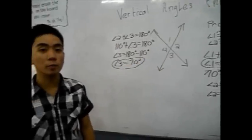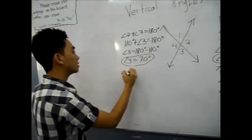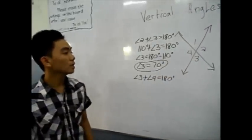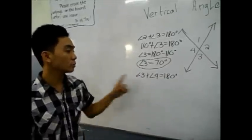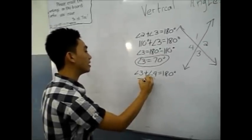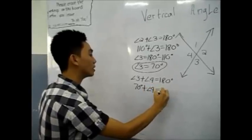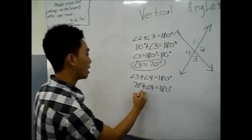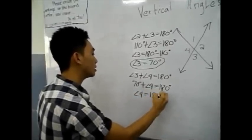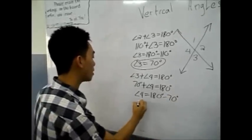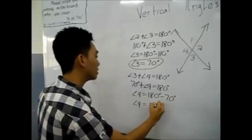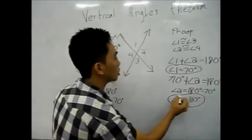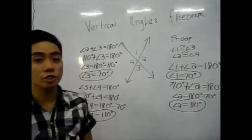Angle 3 and Angle 4 is also a supplementary angle, so Angle 3 plus Angle 4 equals 180 degrees. We have the value of Angle 3, so substituting: 70 degrees plus Angle 4 equals 180 degrees. Transposing, Angle 4 equals 180 minus 70 degrees, so Angle 4 is 110 degrees. Since 110 degrees is also the value of Angle 2, we can prove that Angle 2 is logically equivalent to Angle 4.